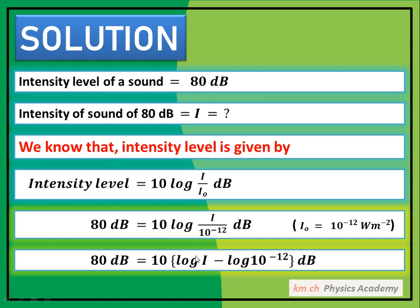کیونکہ 10 نے دونوں terms سے multiply ہونا ہے، تو: 10 log I − 10 log 10⁻¹²۔ اب log mⁿ = n log m کا formula لگائیں گے۔ یہاں n = −12 اور m = 10 ہے، تو یہ minus 12 آگے آجائے گا: −10 × (−12) × log 10 = +12 log 10۔ log 10 = 1 ہوتا ہے، تو یہ 12 بن جائے گا۔